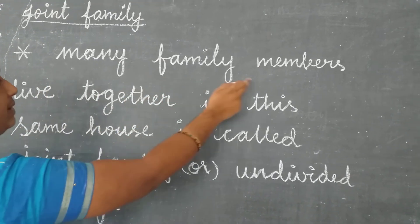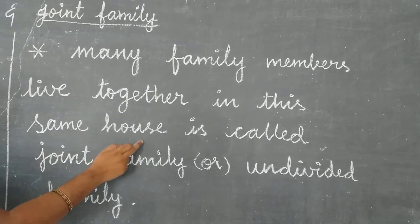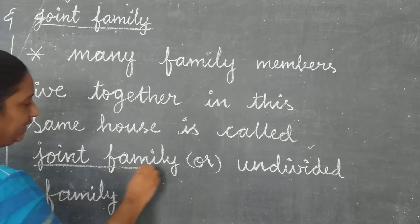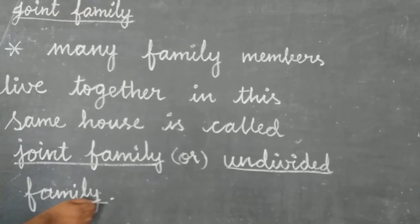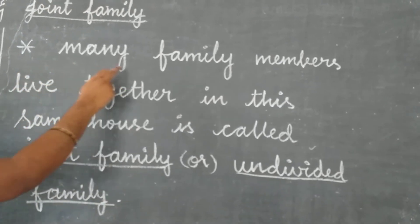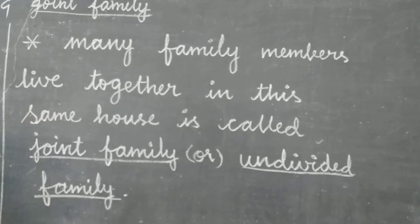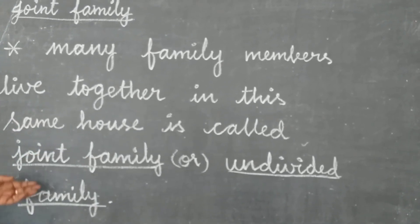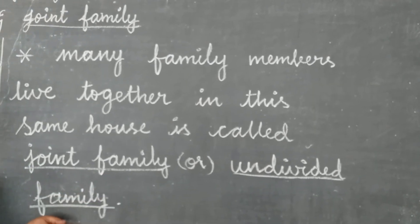Many family members live together in this same house. It is called joint family or undivided family.